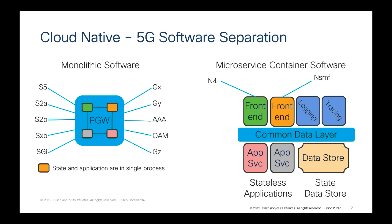Here we compare what existed before cloud-native — monolithic software where all the state and application logic are in a single process — versus the microservices and container platform, where we can decouple the software layers from the services and from the state itself. So we can have stateless applications, then a service application layer, then a common layer, and after that the front-end layers providing interfaces for logging, tracing, and northbound interfaces.